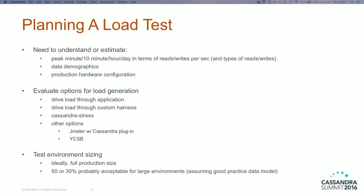Test environment sizing is always a question that comes up. Testing on a full production-size environment is the best validation. With Cassandra, most people who run it in production would say you're confident enough with linear scaling that a 30 or 50% scale test would be sufficient — provided you're confident you've done a good data model and the way you're using Cassandra scales properly. If you're doing a smaller-size load test, be very confident you haven't used features like secondary indexes that prevent scaling the way you expect.